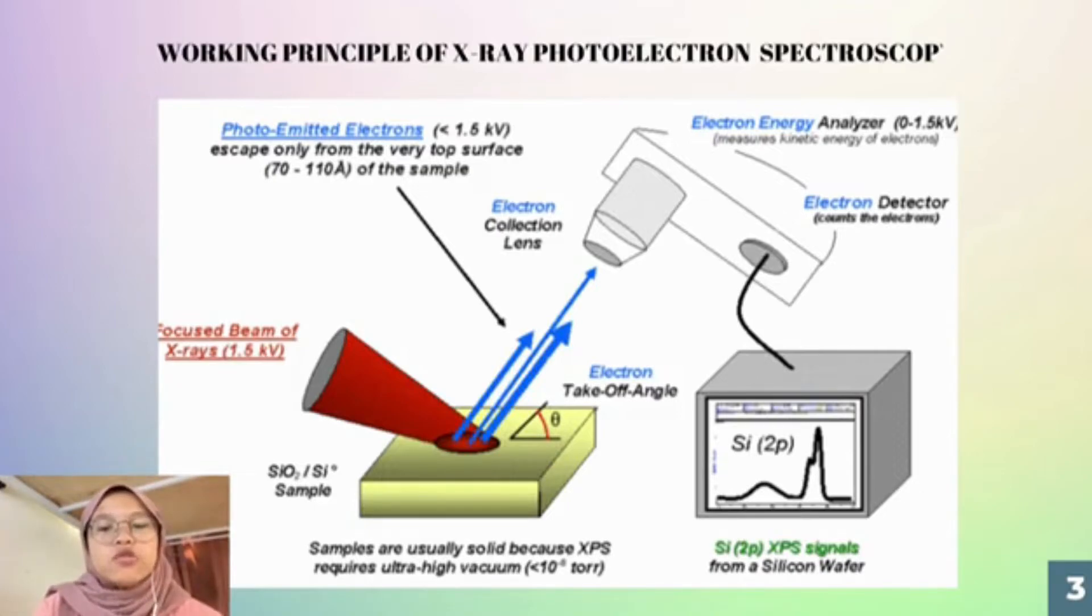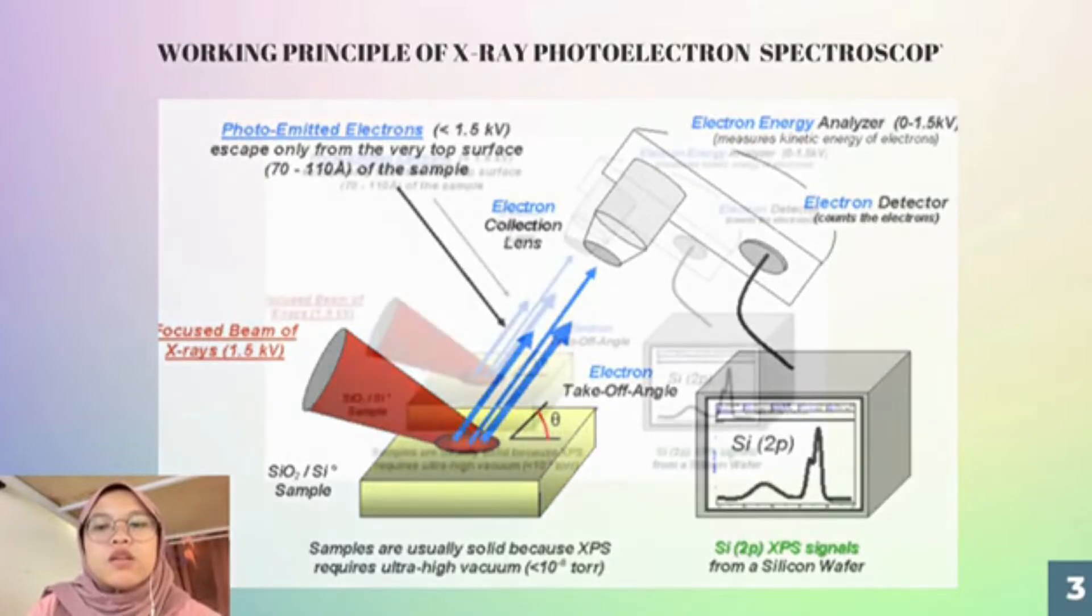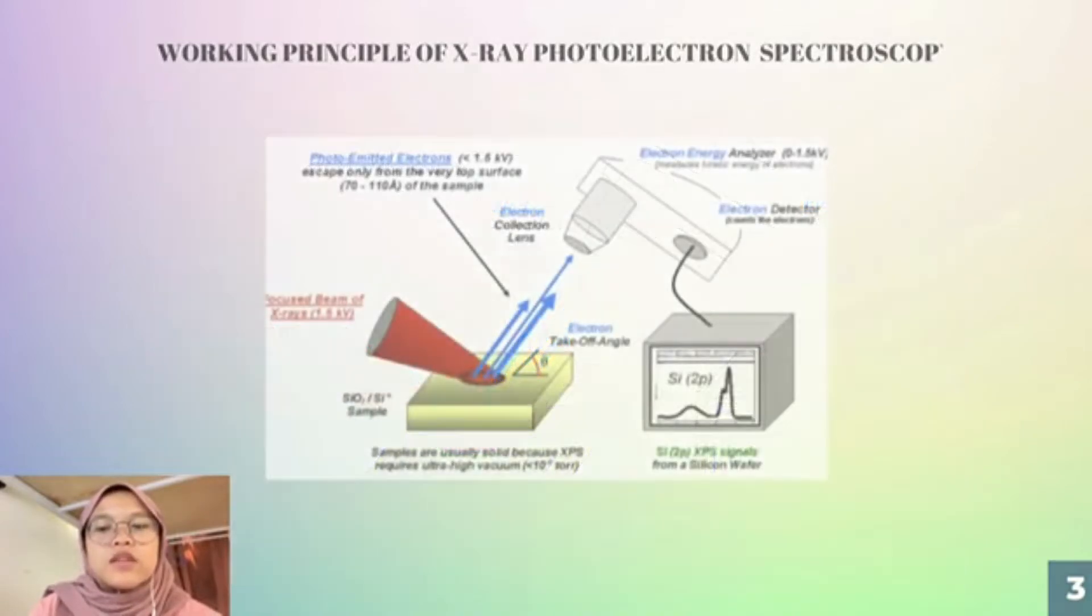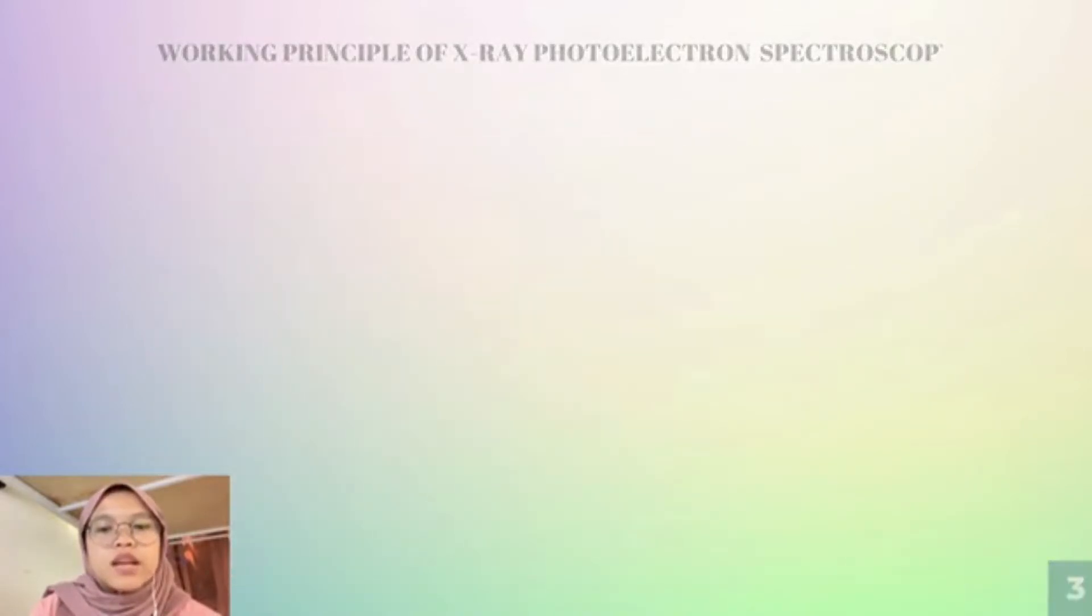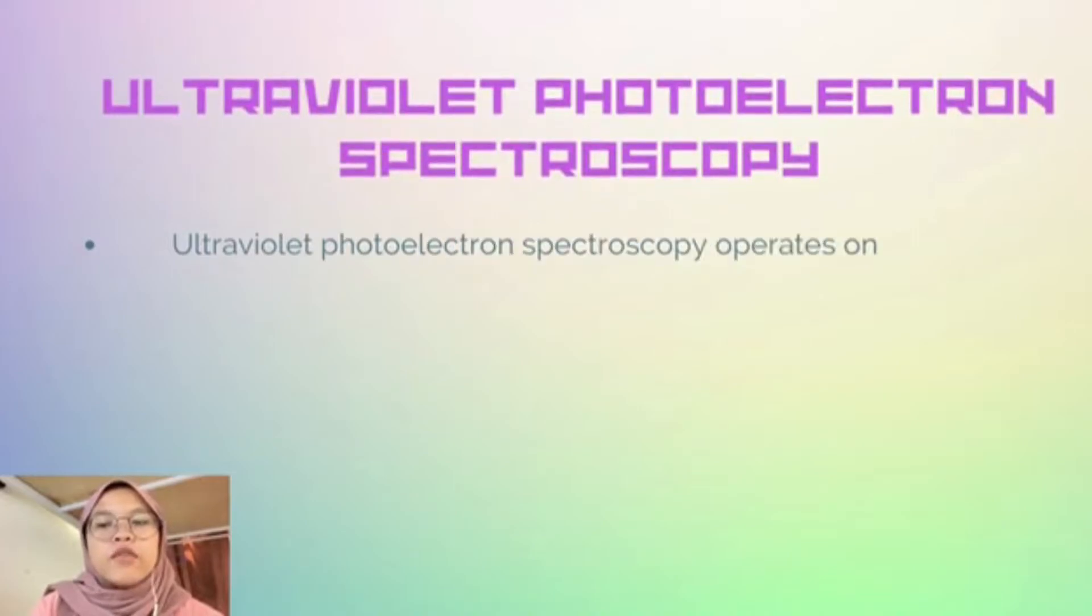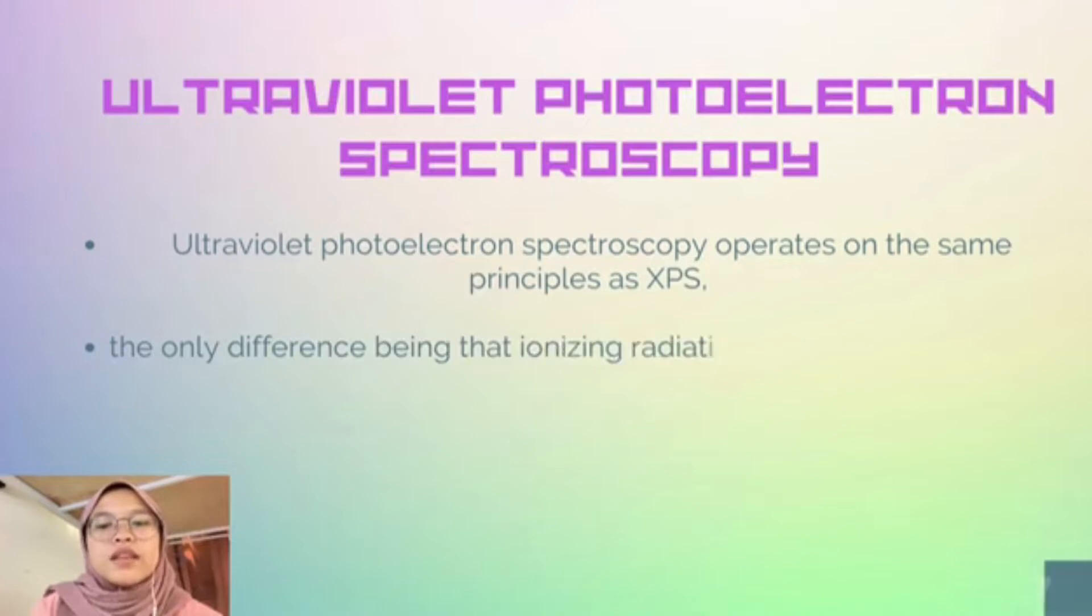The ultraviolet radiation used in UPS is typically obtained using a helium source which has a rather high wavelength and therefore low photon energy. The ultraviolet radiation beam cannot get to the energy level with high energy and causes only the valence electrons to be emitted. This makes UPS good for obtaining information about the bonding characteristics and details of the valence electrons.